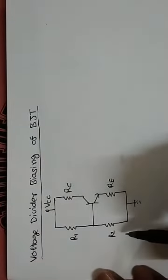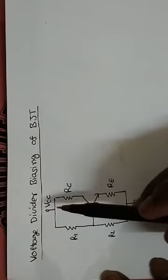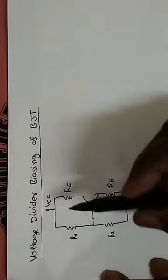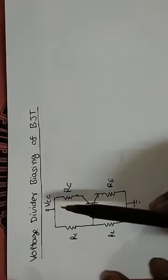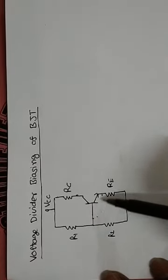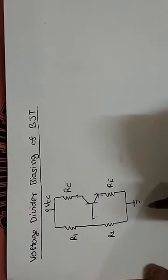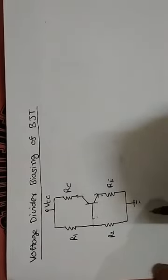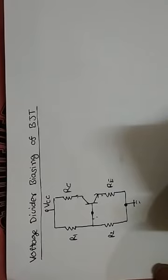इसमें resistor R1 और R2 voltage divider form कर रहे हैं. यह supply voltage VCC को इस तरह से divide करेंगे कि base-emitter junction forward bias हो, और collector-base junction reverse bias हो. यह R1 और R2 available voltage VCC को इस तरह divide करते हैं कि base और emitter forward bias रहेगा और collector और base reverse bias रहेगा. इस तरह से यह circuit एक amplifier की तरह work करेगा.